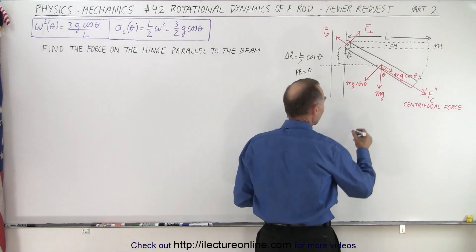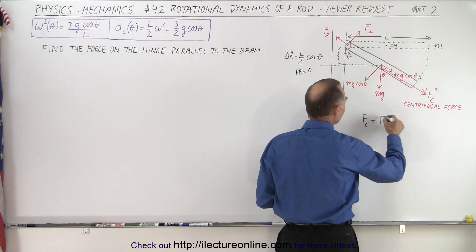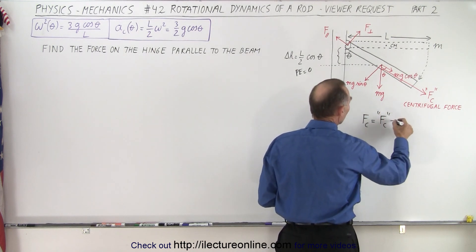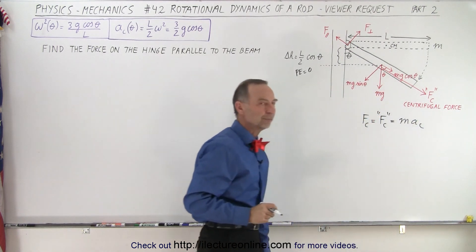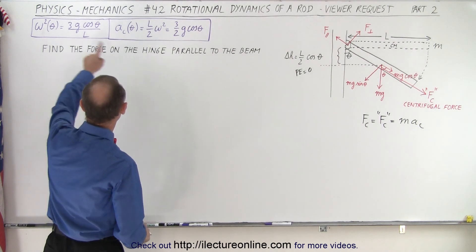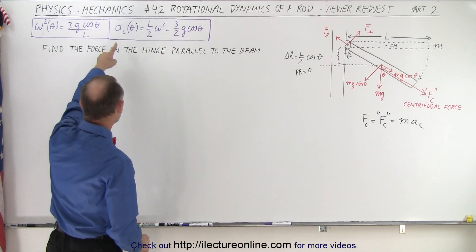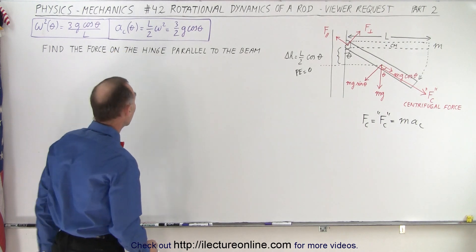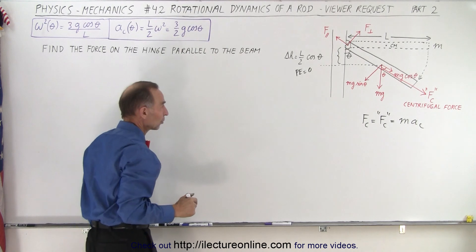So what we can say here is that centripetal force, which is the same as the magnitude of the centrifugal force, which is equal to the mass times the centripetal acceleration. F equals ma still holds. Now from the previous video, we calculated omega squared and we calculated the centripetal acceleration as a function of angle. And we noticed that it was equal to 3 halves g times the cosine of theta.